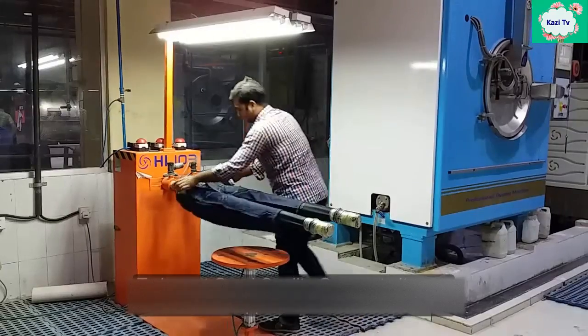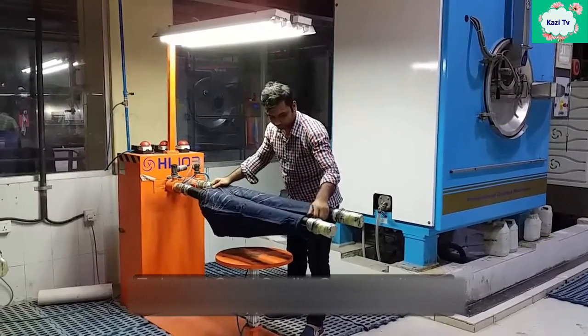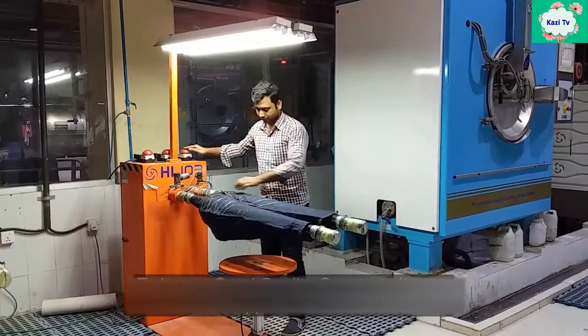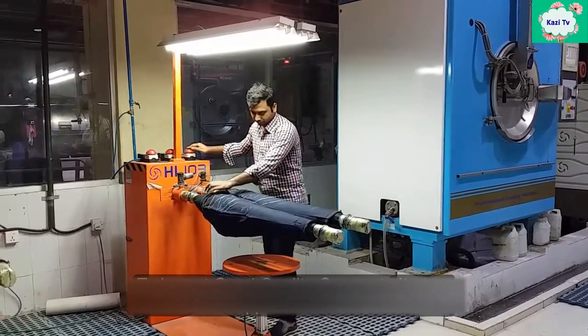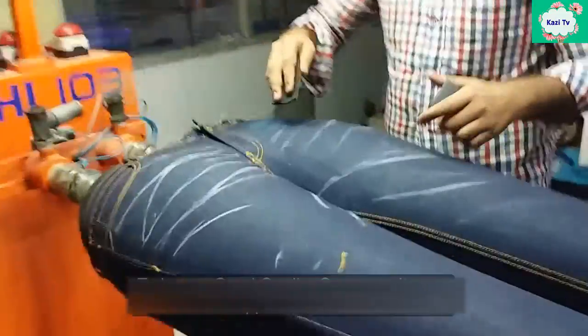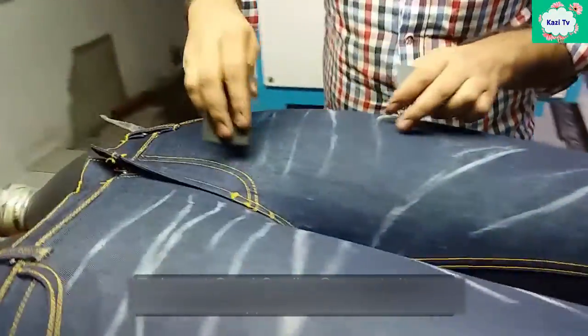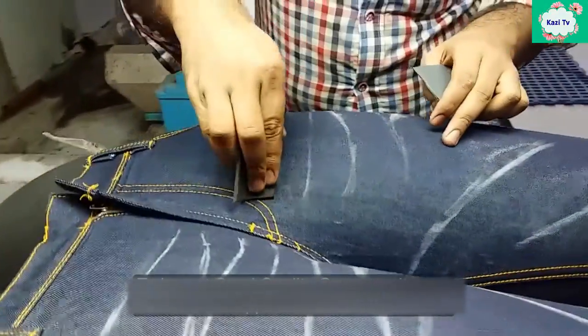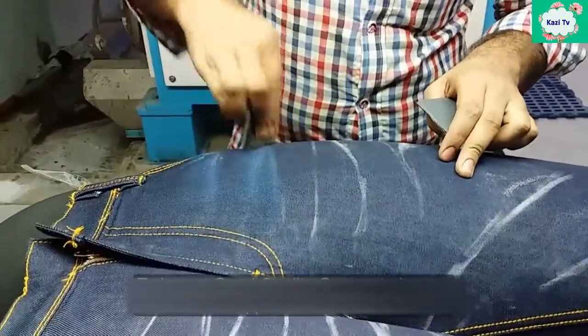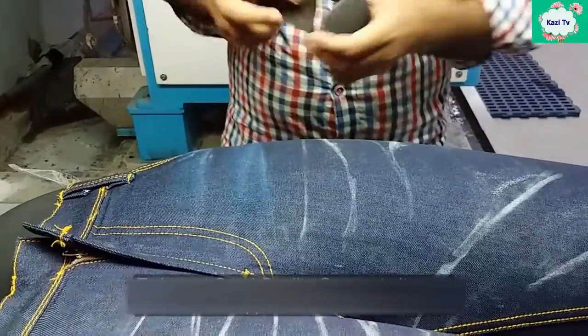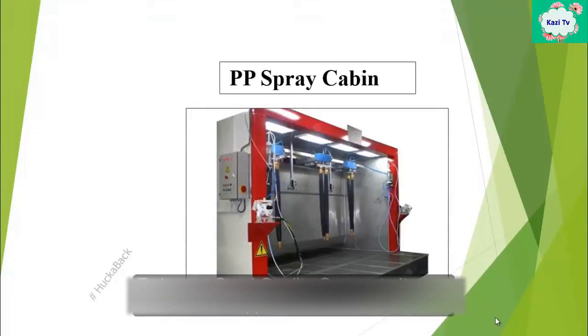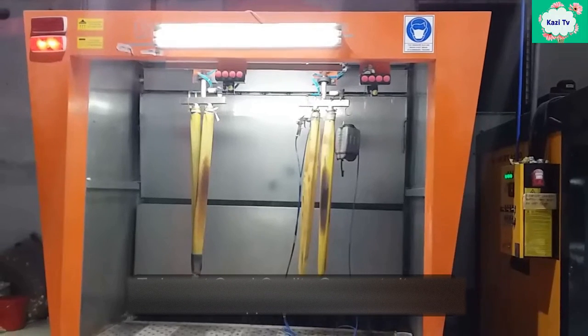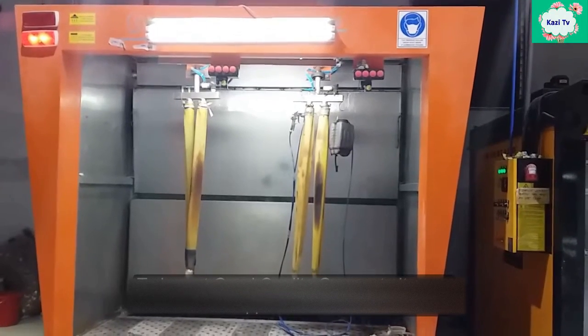Air dummy: the air dummy helps to make whisker and brush effects. After mounting the garments on the dummy, air is filled into the dummy. The air dummy also helps to spray PP solution on garments.